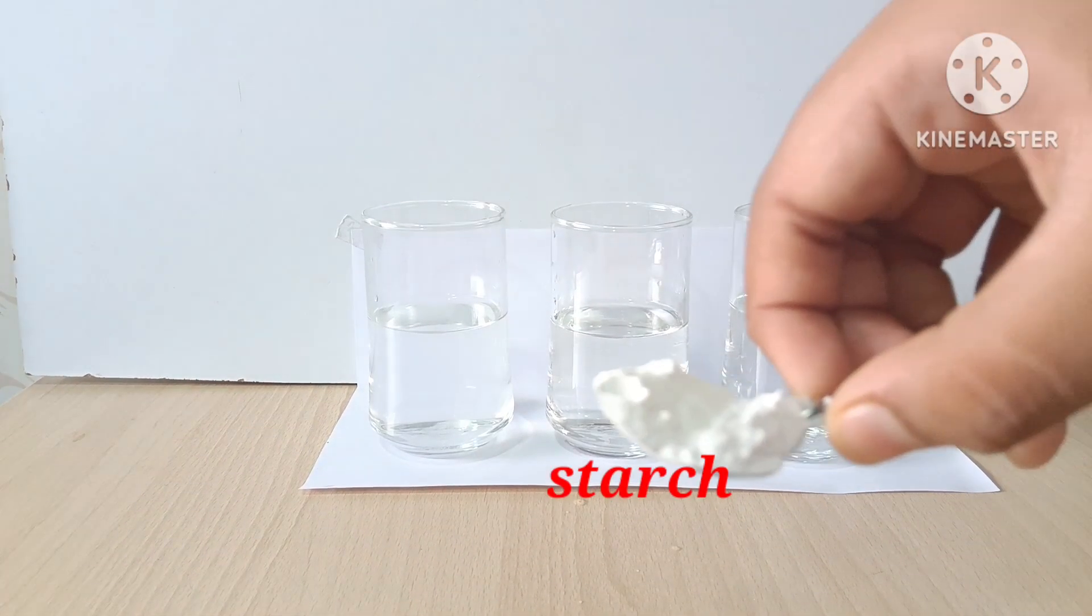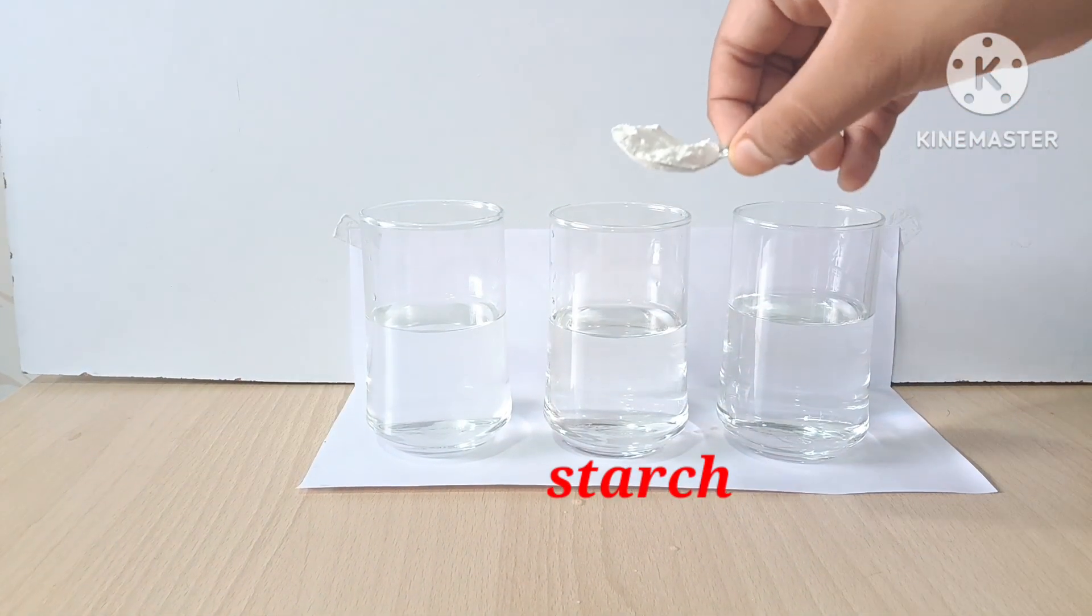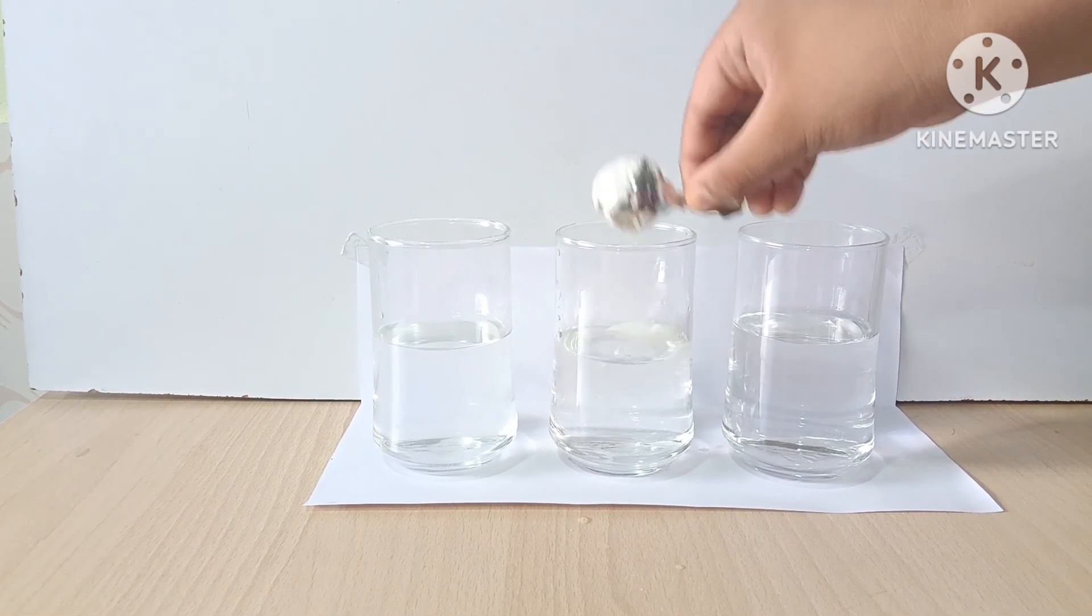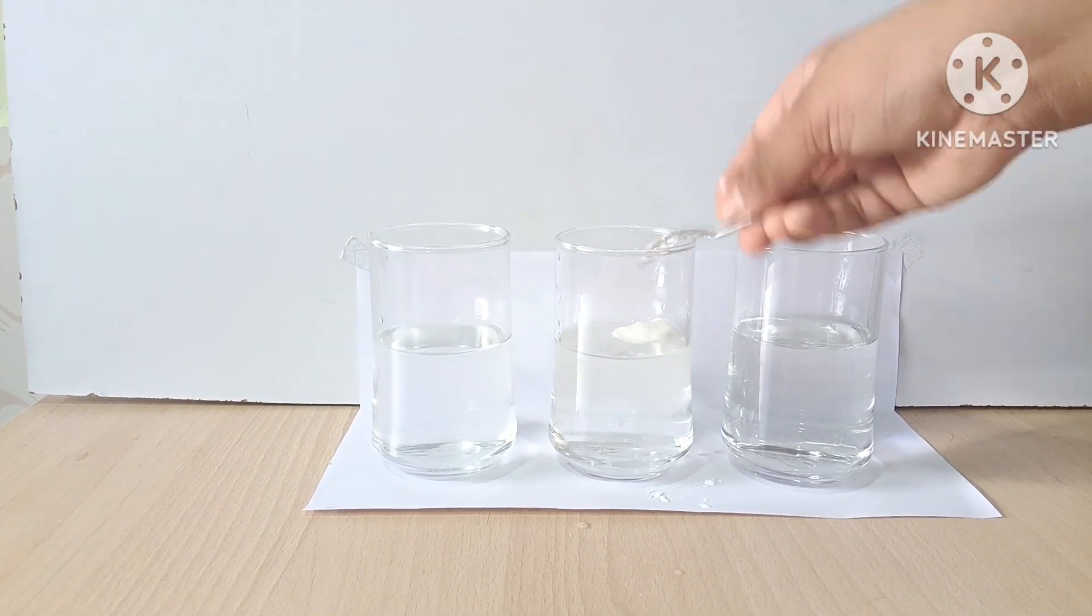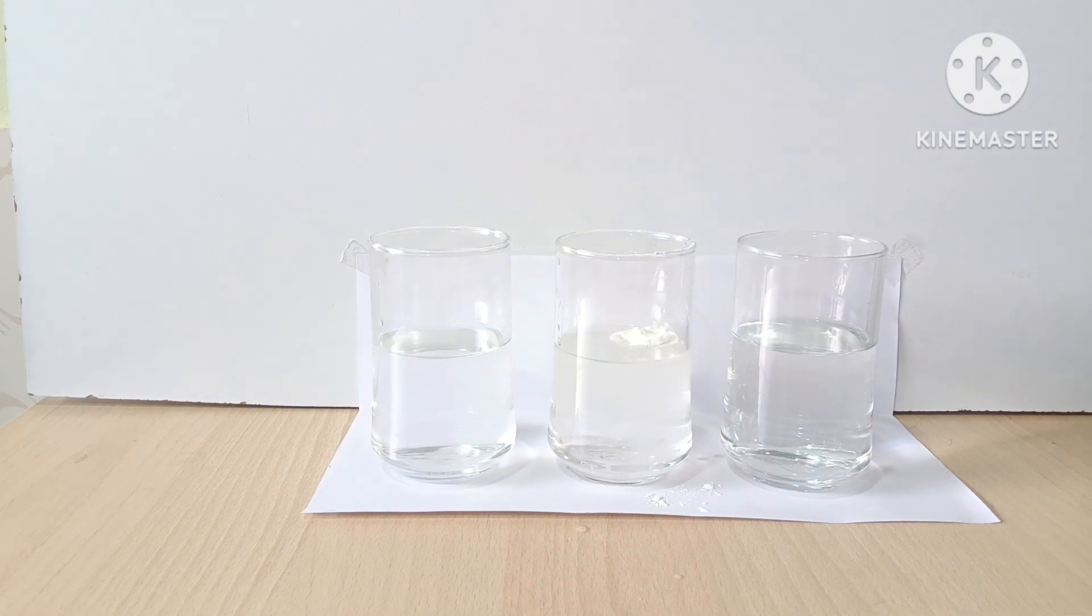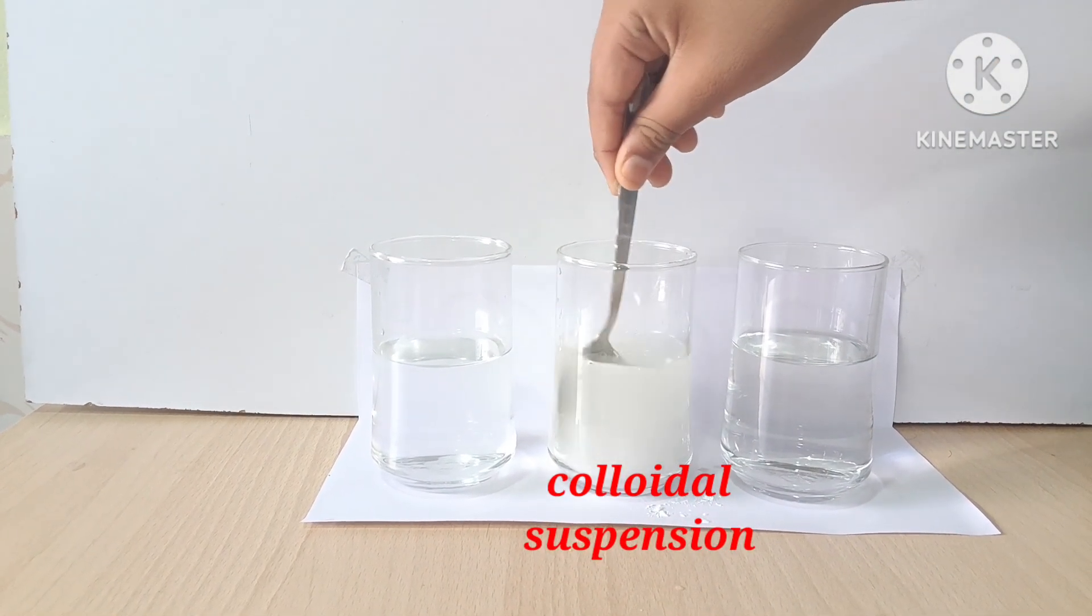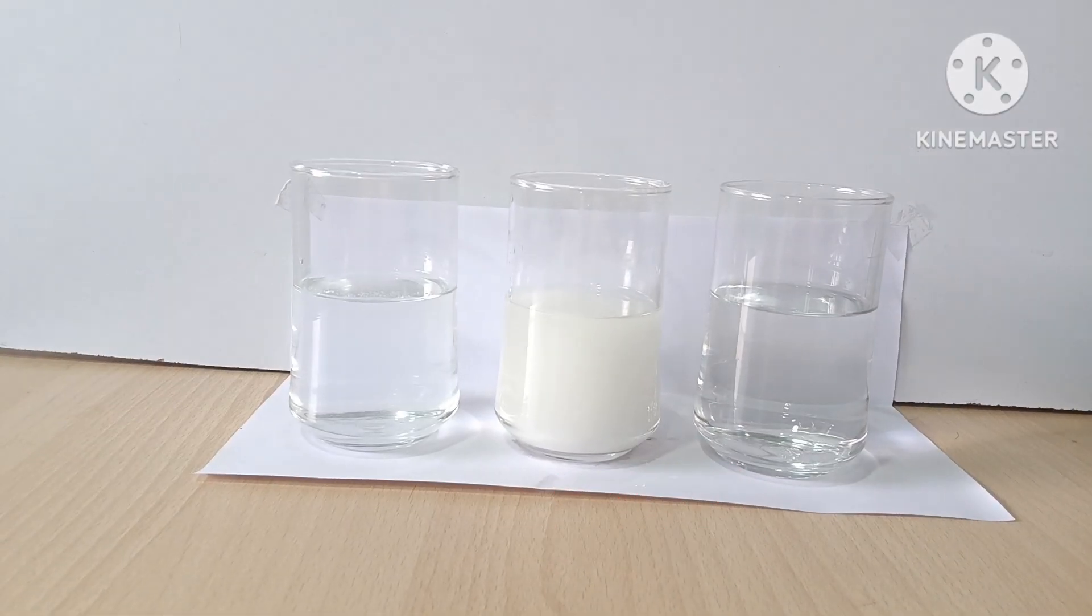In the second glass tumbler, mix starch powder with water. Stir thoroughly to ensure the starch is suspended in the water. This will form a colloidal suspension.